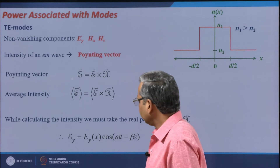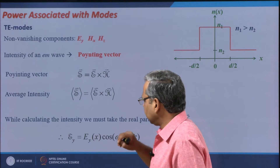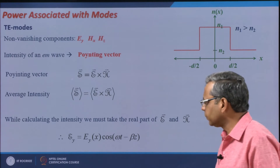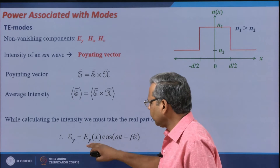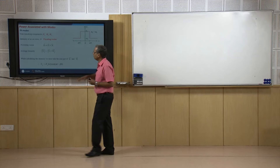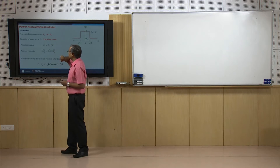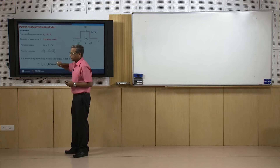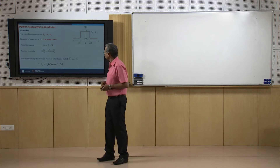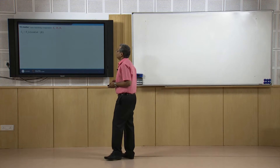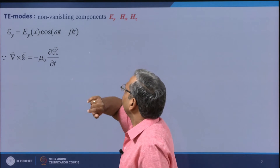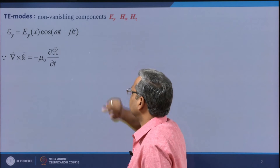For TE modes, EY is defined as EY(x) · e^(iωt − βz), so its real part would be EY(x) cos(ωt − βz). I have EY; what is left is HX and HZ, so that I can find out the Poynting vector and therefore the intensity.